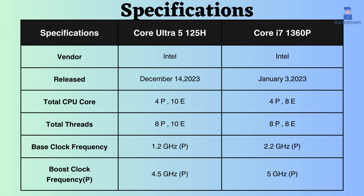The Core Ultra 5 125H was released on December 14, 2023, which is around 11 months after the release of the Intel Core i7-1360P.